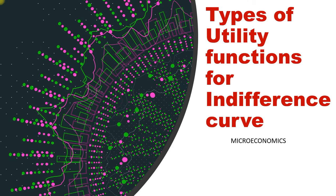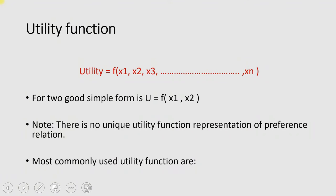Hi guys, in this video we will learn about the types of utility functions for indifference curves. A utility function is usually represented in the form where x1, x2, x3, and so on are the number of goods a consumer purchases to satisfy their wants. In this video we will use a two-good utility function to understand utility functions and their types. Note that there is no unique utility function representation for all different relations in economics.